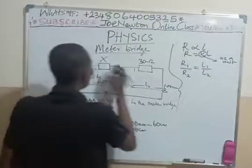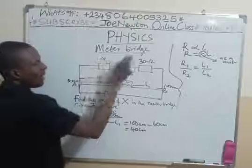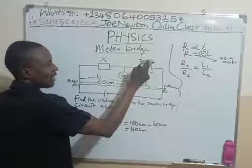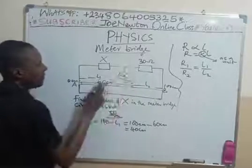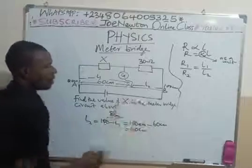Okay. So, here, this X is our R1. And this 30 is our R2. So, our 60 is L1, and this 40 we got here is our L2.